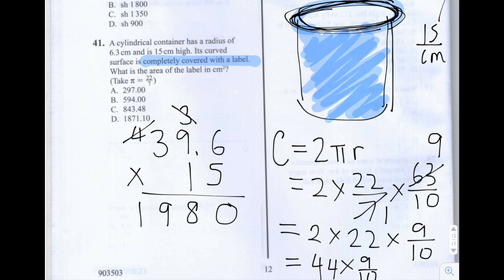And then 10 times 39.6 is simply 396. So I'll write that here. So 6, 9, 3. Let's add that all together. So 0, 8 plus 6 is 14, 4 carry 1. 9 plus 9 plus 1 is 19. 9 carry 1. 1 plus 1 plus 2 is 5.